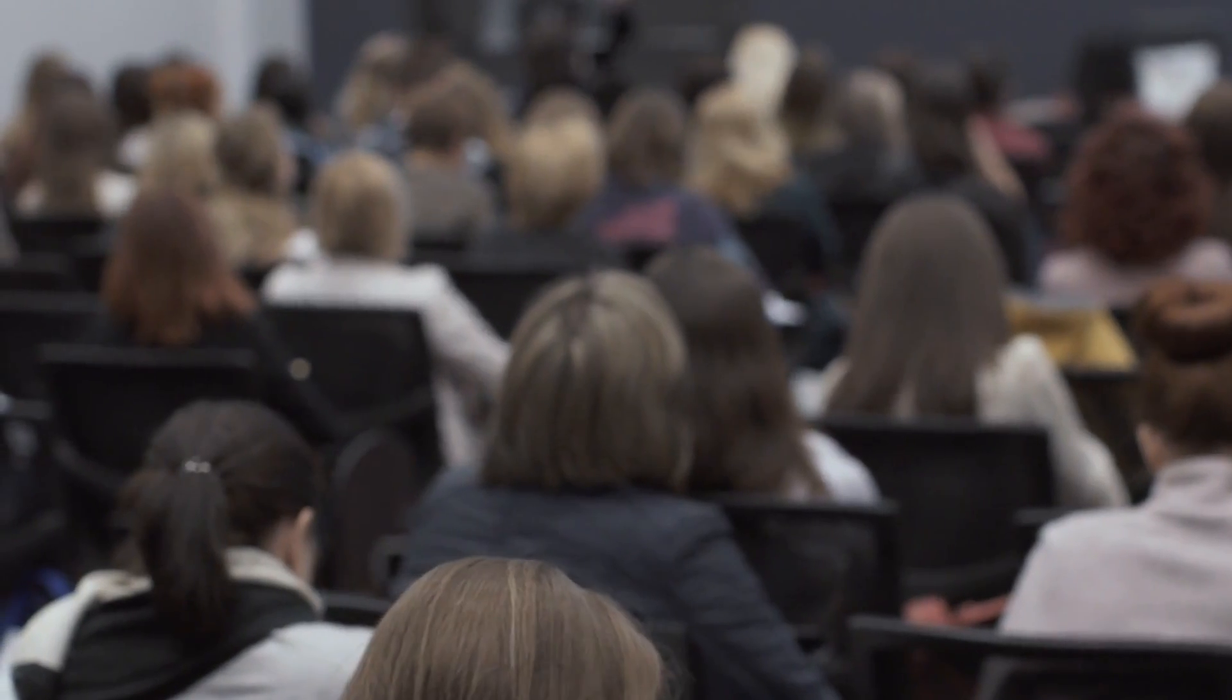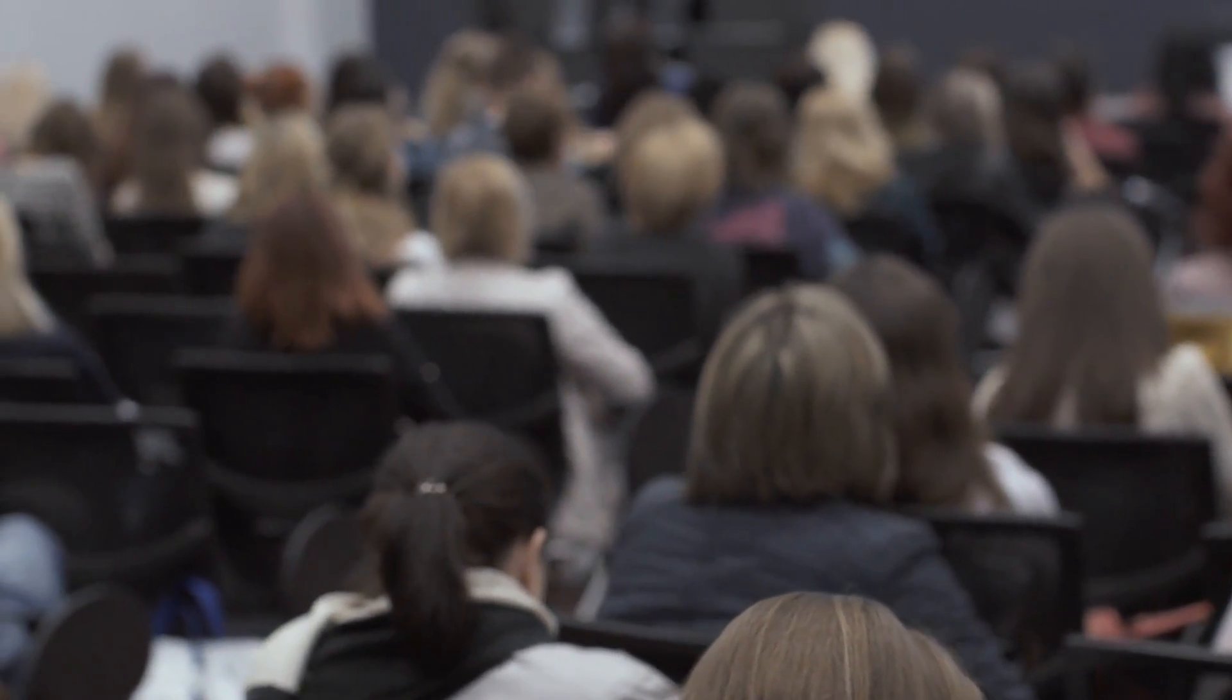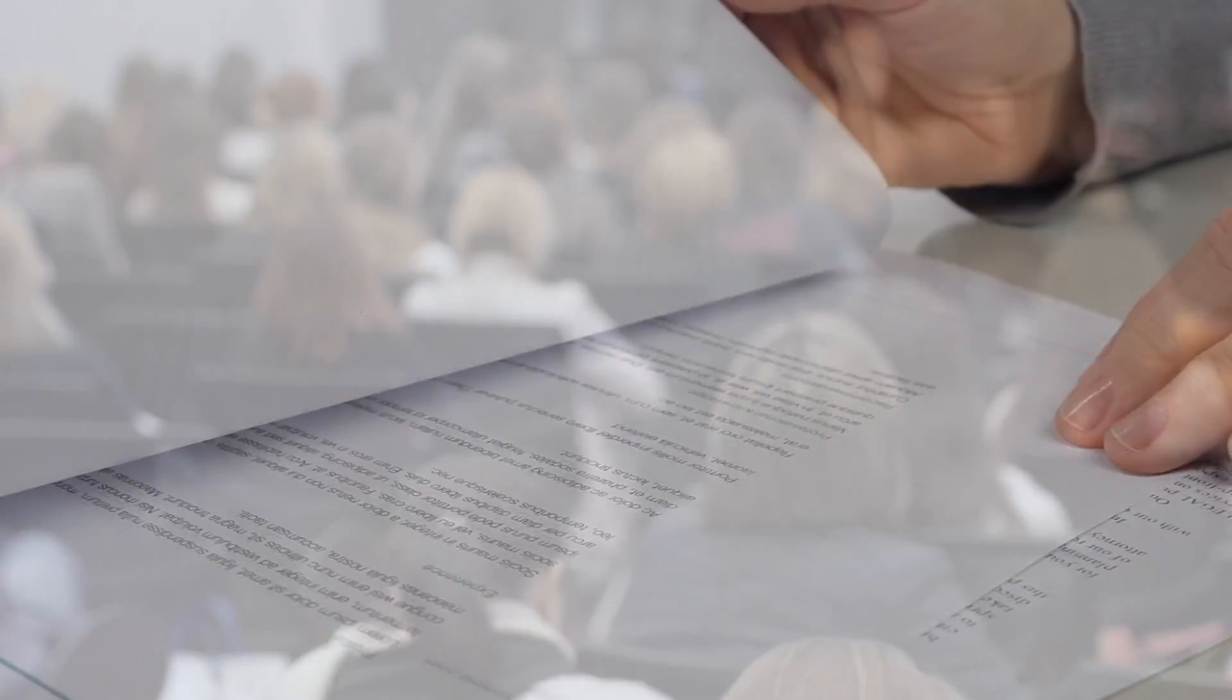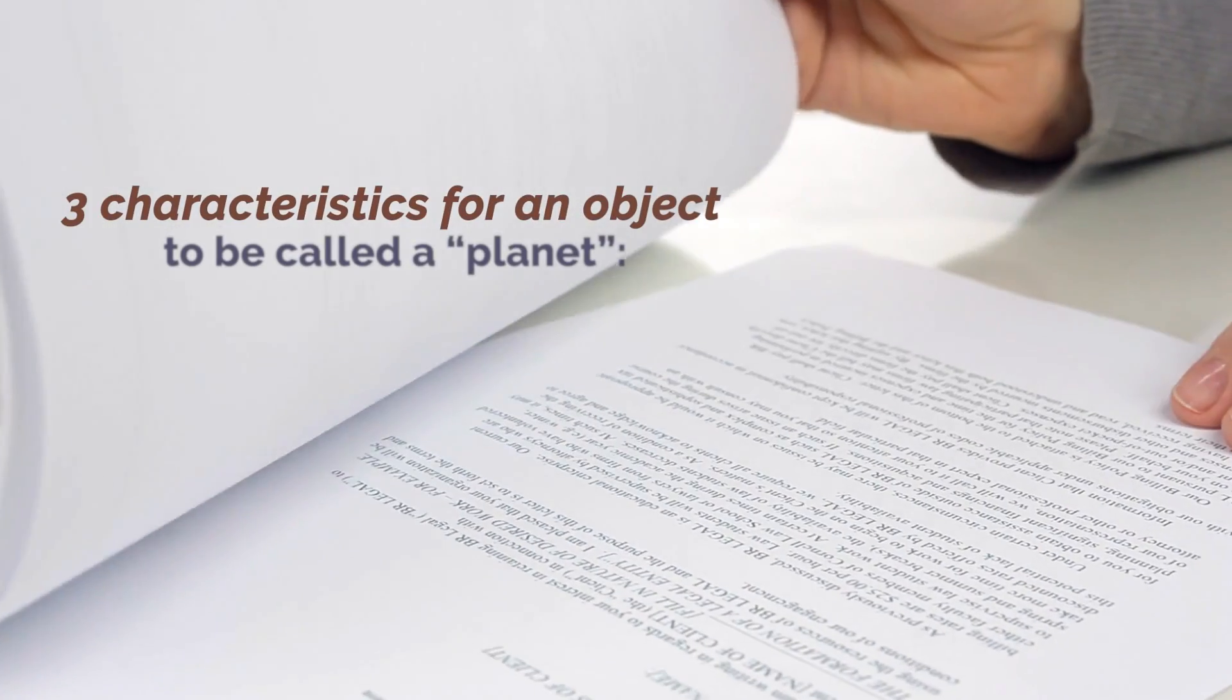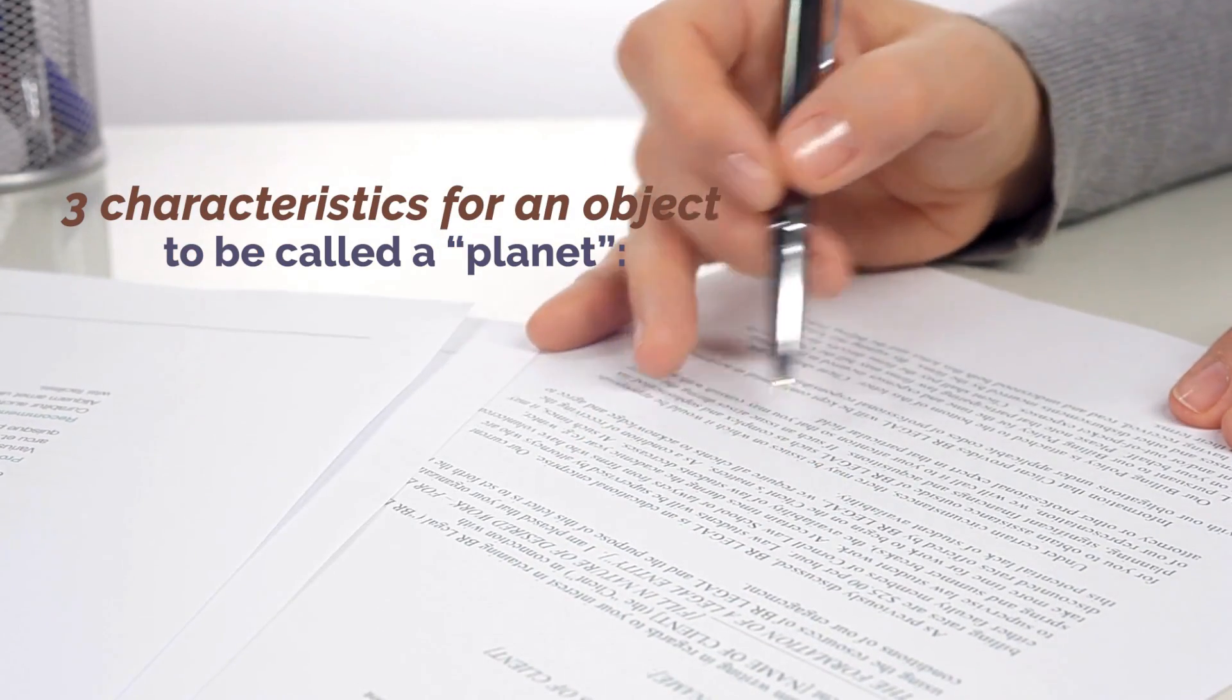And so, amidst fear clashes between opposing factions of the 400 astronomers present at the conference, a motion was prepared outlining the three characteristics that an object in the solar system must have in order to be called a planet.